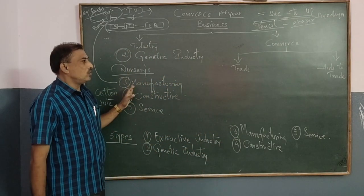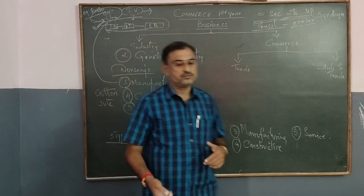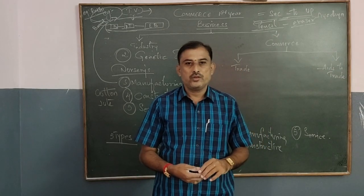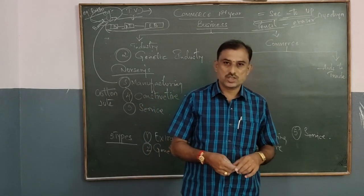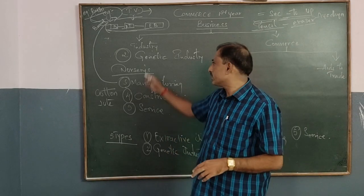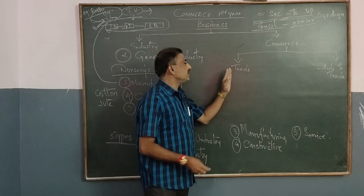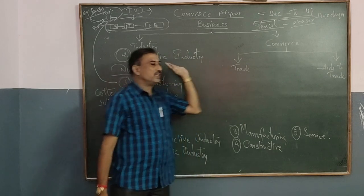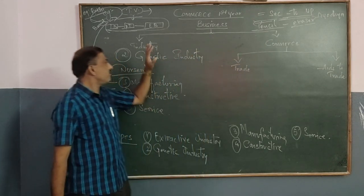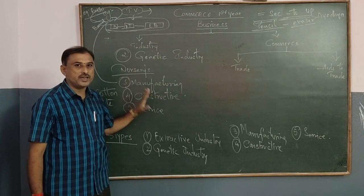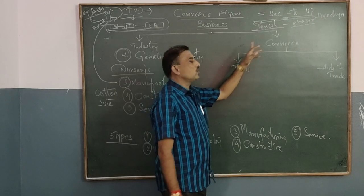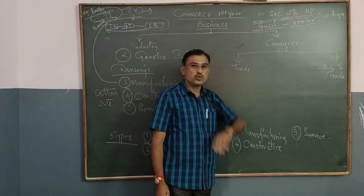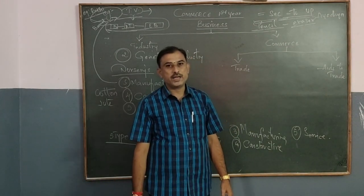Whatever doubts you have, you can post in your comments. We are stopping the class today. In the next class we are going to discuss commerce — another branch of business. Business consists of industry and commerce. Today we have completed the concept of industry. In the next class I am going to teach what is trade and aids to trade. So I conclude my class — thank you.